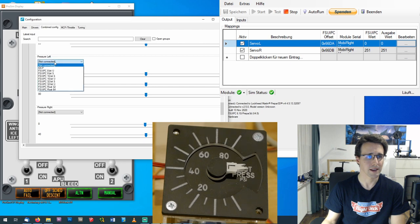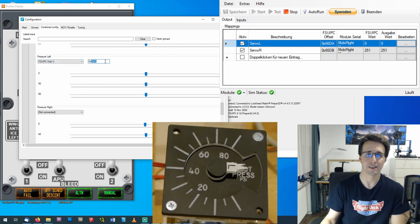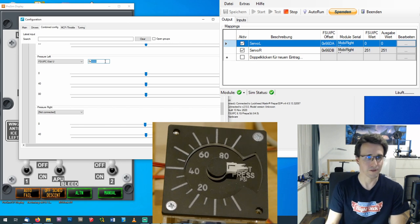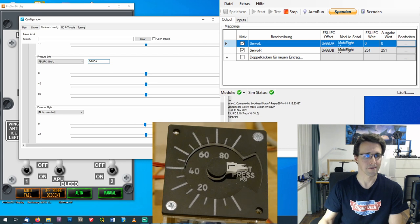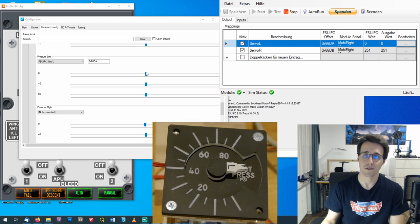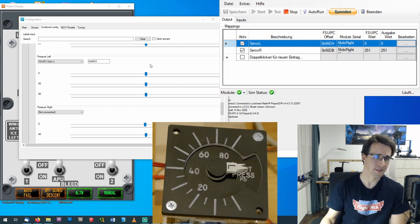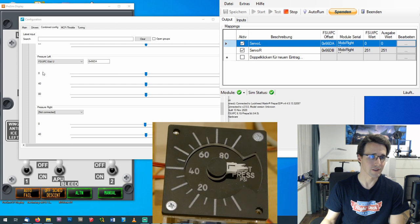So I say FSUIPC 8 bit unsigned and enter my offset value for the left needle 66DA. And when MobiFlight is started I can already see some changes to the needle when I move these sliders. The goal is that I move this slider so that the needle is at the point we are searching for here 0, 40 and 80.